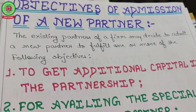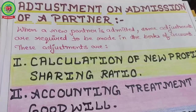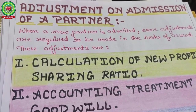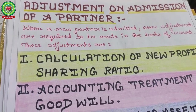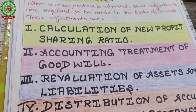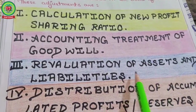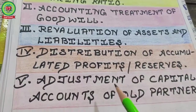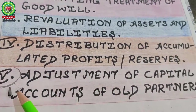When a new partner is admitted, some adjustments are required in the books of accounts: number one, calculation of new profit sharing ratio — already done; accounting treatment of goodwill — done; revaluation of assets and liabilities — done; distribution of accumulated profits and reserves — done. Today's current topic is the last one — adjustment of capital accounts.